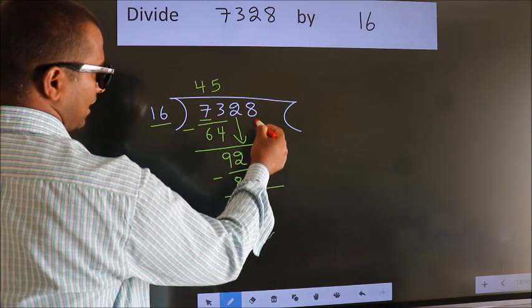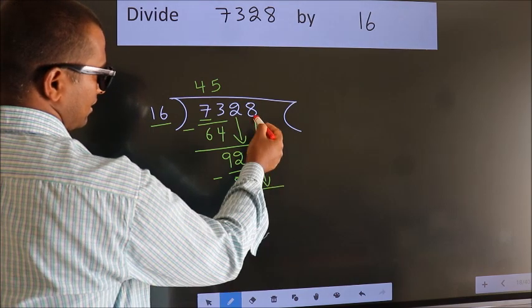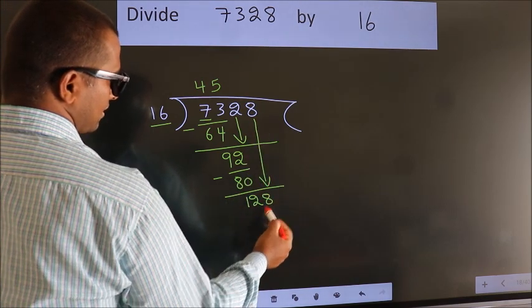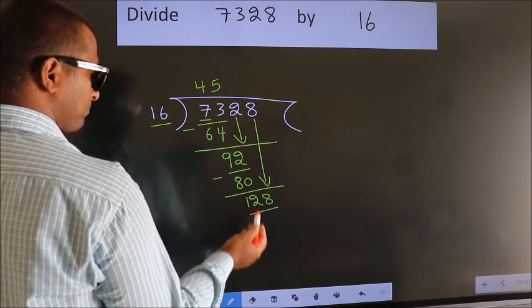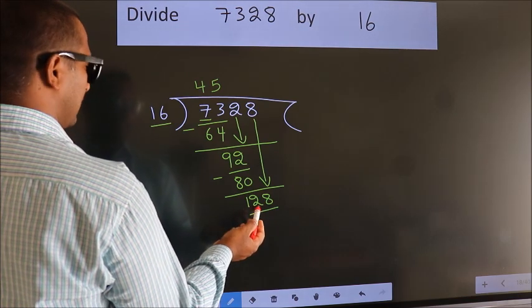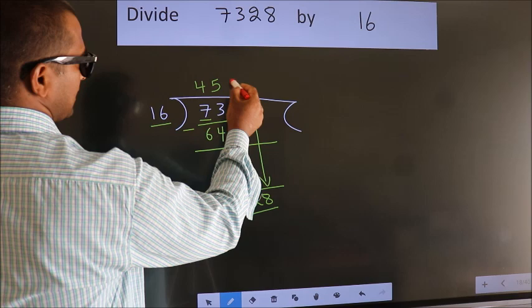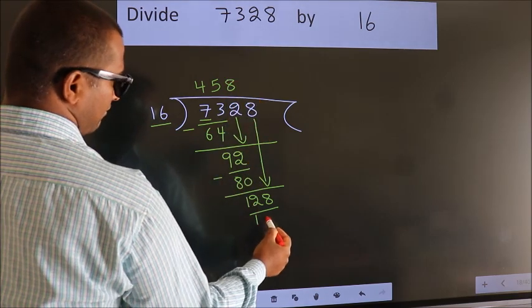After this, bring down the beside number. So 8 down. So 128. When do we get 128 in the 16 table? 16 eights, 128.